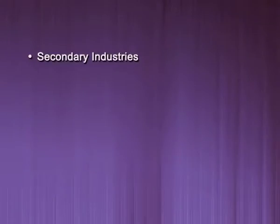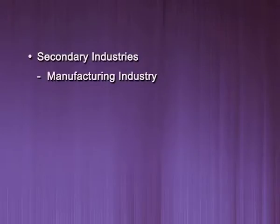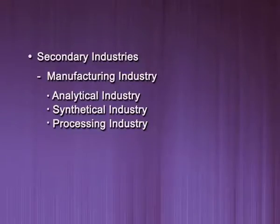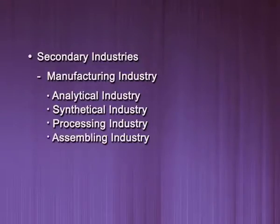The secondary industry can further be divided into various types. First is manufacturing industry — as its name suggests, manufacturing means producing and processing the goods provided by the primary industry. We can classify the manufacturing industry into four types: analytical industry, synthetical industry, processing industry, and assembling industry.